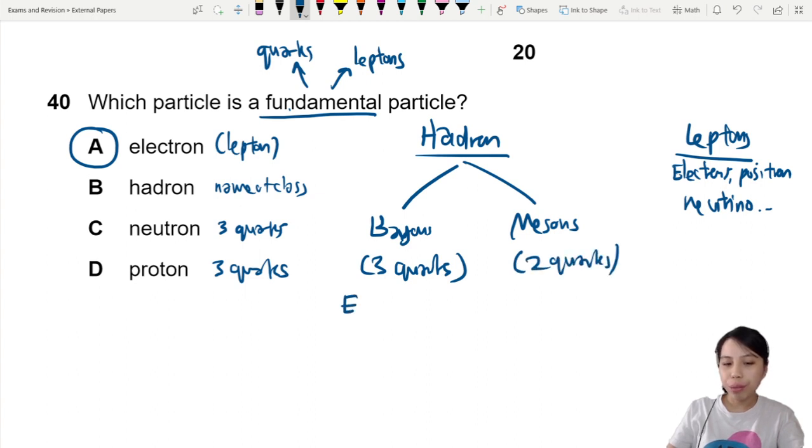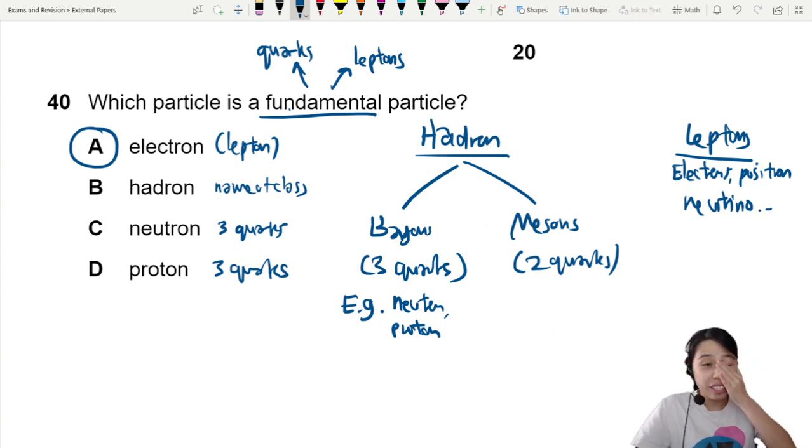Examples, the most famous ones of baryons would be your neutron and your proton. So just so you know that these names are just classification systems. Alright, so that's all for this video. See you in the next one.